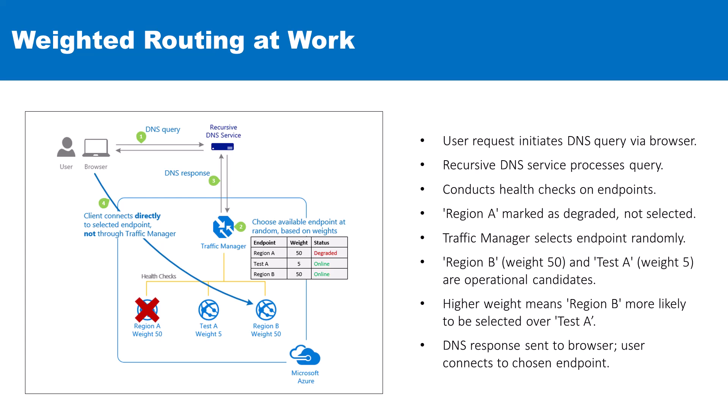The Traffic Manager, armed with its ongoing health checks, evaluates the status of each endpoint. In this scenario, we can see that Region A, although having a significant weight of 50, is marked as degraded. Consequently, Traffic Manager is not going to direct traffic to it.